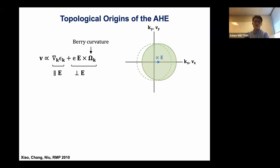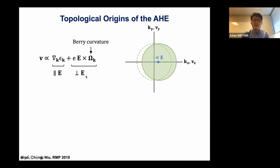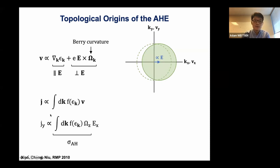The intrinsic part is probably the easiest to understand nowadays because we understand more about the topological aspects of band structure, and we know there's an important quantity called the Berry curvature. It gives us a velocity contribution of the electrons not only parallel to the applied electric field — that's the ordinary current — but also a velocity contribution perpendicular to the electric field, and that's exactly what gives rise to a Hall effect. The proportionality constant between that transverse current and the applied field is the anomalous Hall conductivity, and unsurprisingly it involves the Berry curvature.